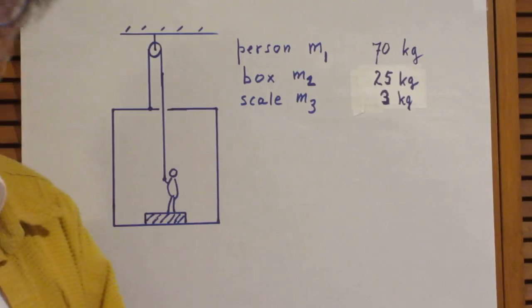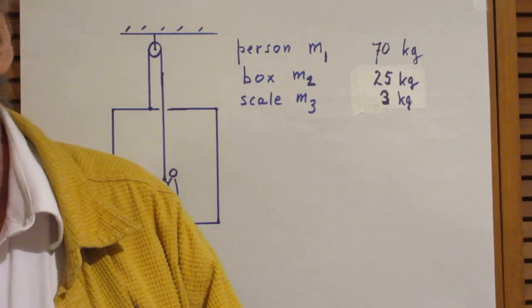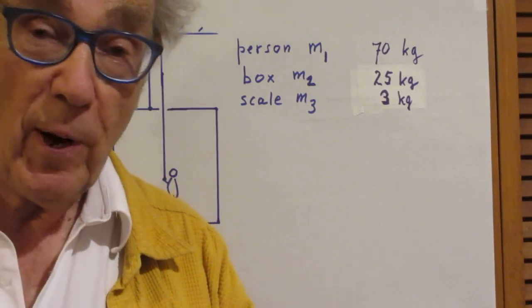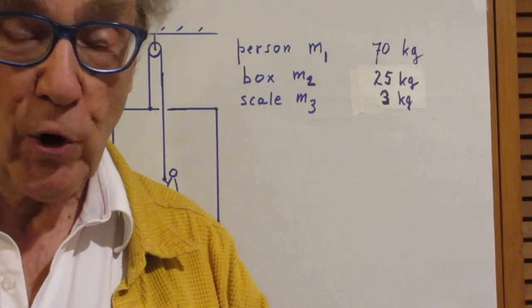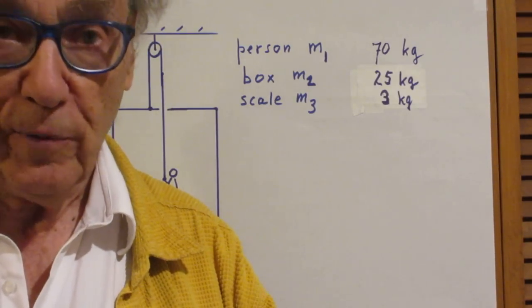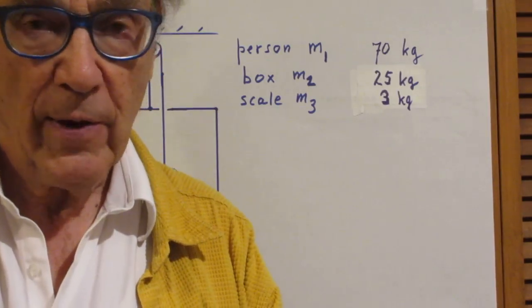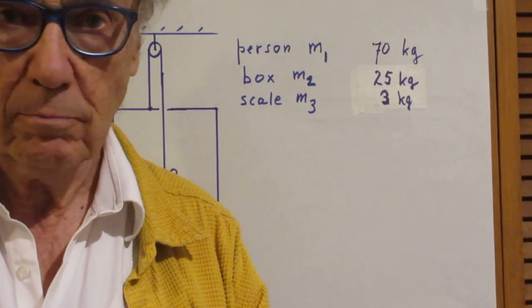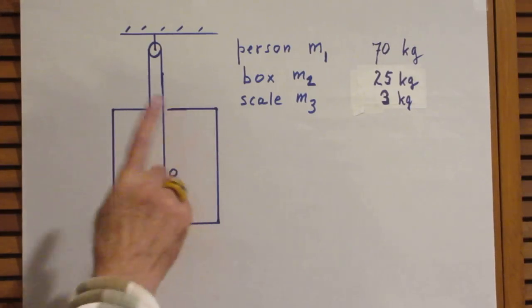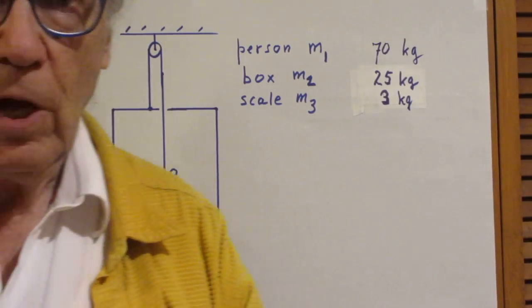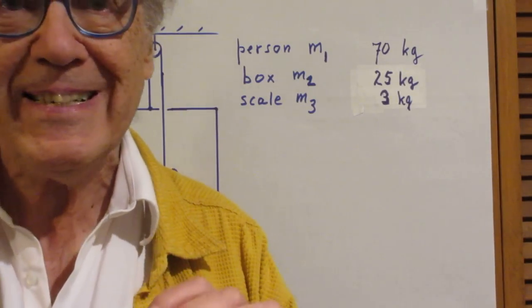I may give you a hint, and the hint is: work as much as you can with free body diagrams. There are three bodies here—a person, scale, and a box. Try to do a free body diagram on each of those three.